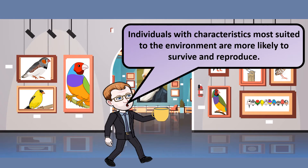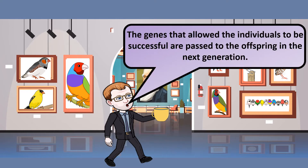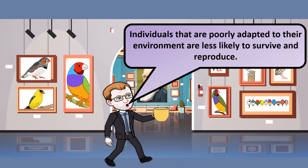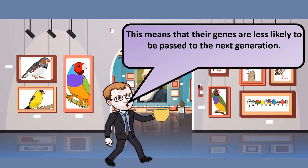We now know that this variation is because of small differences in the genes. Individuals with characteristics most suited to the environment are more likely to survive and therefore more likely to reproduce. The genes that allow individuals to be successful are passed on to their offspring. Individuals that are poorly adapted to the environment are less likely to survive and therefore tend not to reproduce, meaning their genes are less likely to be passed on to the next generation.